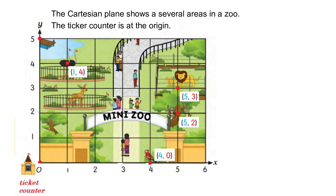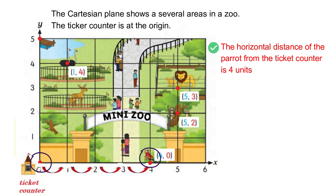Let's find the horizontal distance of the parrot from the ticket counter. To go to the parrot from the ticket counter, we have to move four units to the right. So the horizontal distance will be four units.